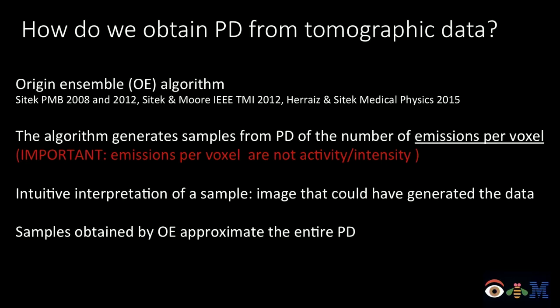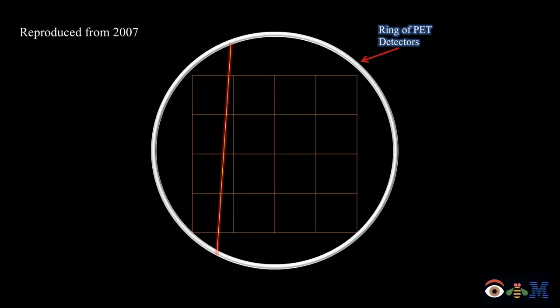What this algorithm does is essentially extract images that possibly could have generated the observed data. I'll go through it quickly because it's easy to explain. I noted it as originating from 2007, because I accidentally discovered it and then struggled for many years to explain it properly in terms of statistics. The algorithm is now more than 10 years old.